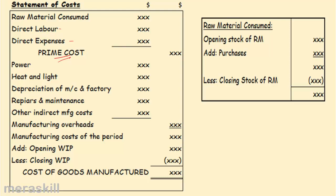Do you sell all the goods you manufacture? Not necessarily. If you have closing inventory, it means you have not sold everything. So: all direct costs give you prime cost. Add manufacturing overhead and you get the manufacturing cost of the period. Add opening WIP less closing WIP and you get the cost of goods manufactured.